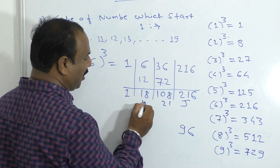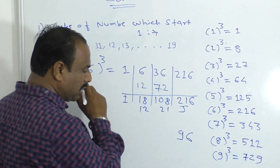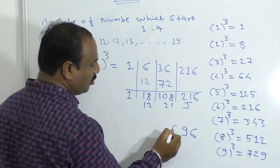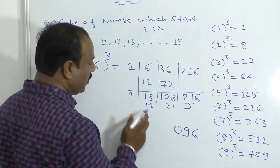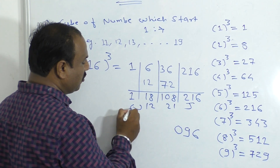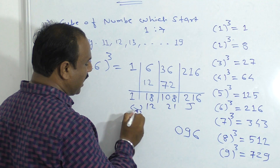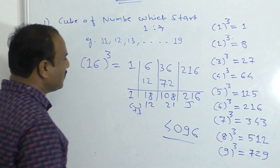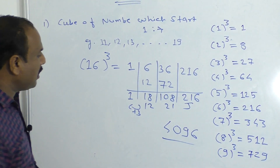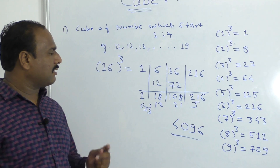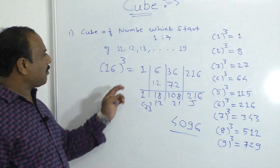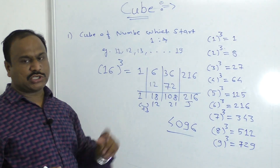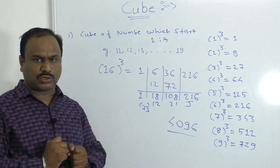So what do we do? 12. Three times are added. 3 plus 1 is 4. So 4 and the result is 4096.